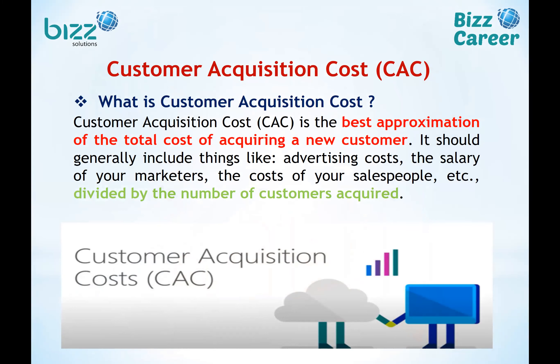If we think about it this way, we can easily allocate the cost. I will try to demonstrate it from the viewpoint of accounts and finance, which will also help marketing and sales people. It should generally include things like advertising cost, the salary of marketers, and the cost of the sales people — divided by the number of customers acquired.